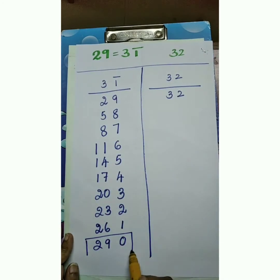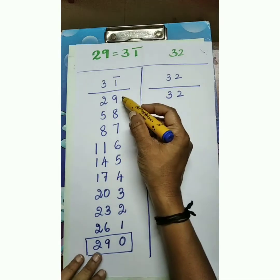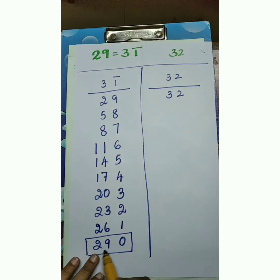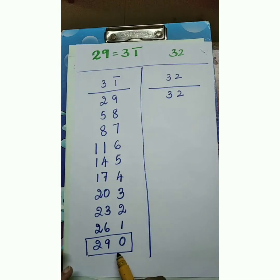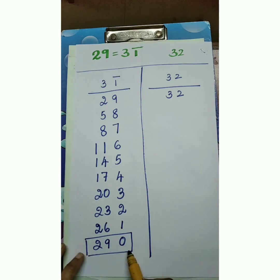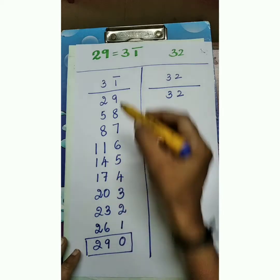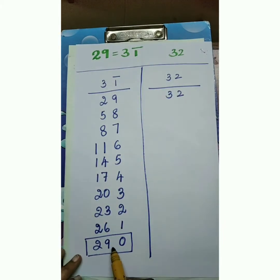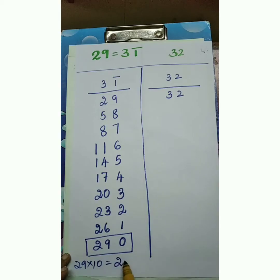Here our question is 29, and the answer column reads 2, 9, 0 — so we can understand this is the 10th level answer. That means 29 into 10 equals 290.